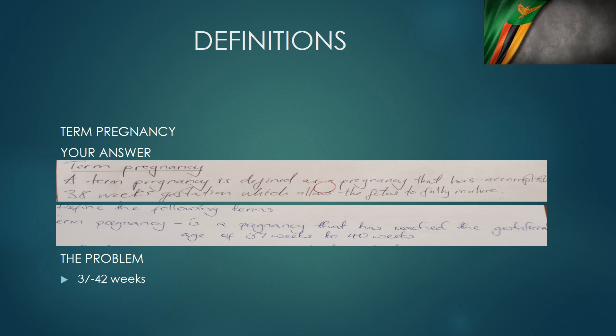A candidate here has been asked to define what a term pregnancy is. I've given two examples right from your papers. Someone says a term pregnancy is a pregnancy that has accomplished 38 weeks gestation, which allows the fetus to mature. The problem with that definition is there's nothing of what we want. We just want you to mention 37 weeks, where term starts, and 42 weeks, where term ends. Term is a period of five weeks from 37 to 42 weeks.